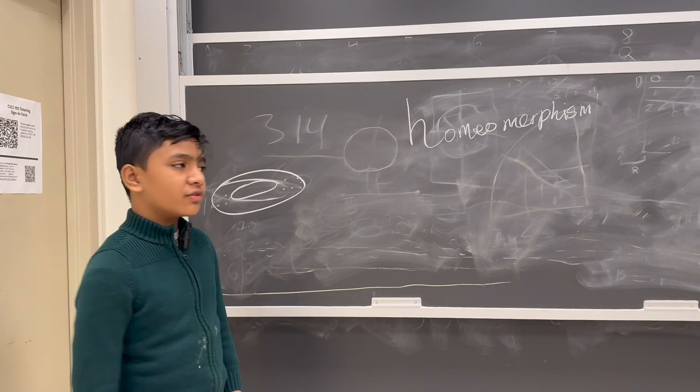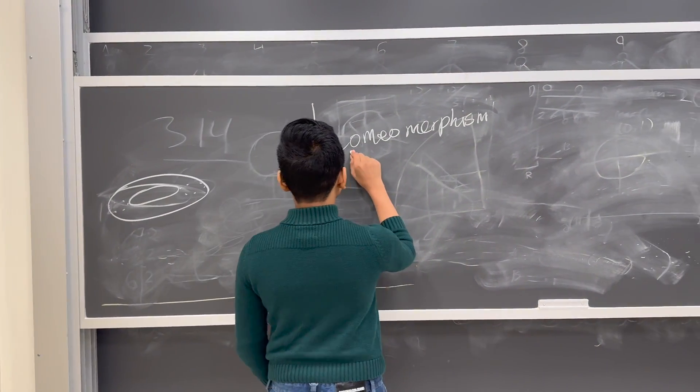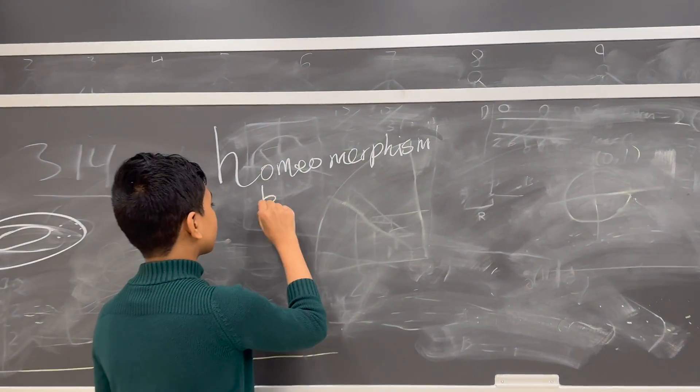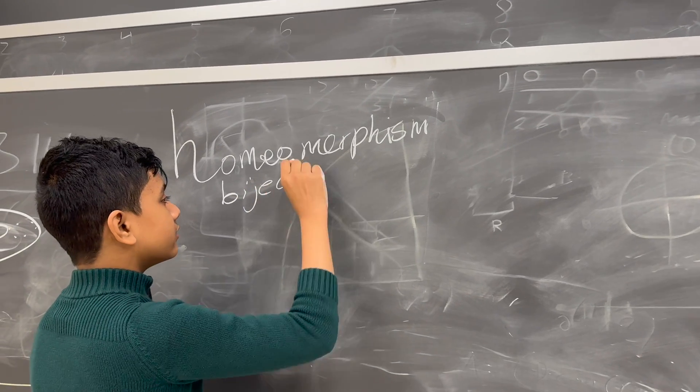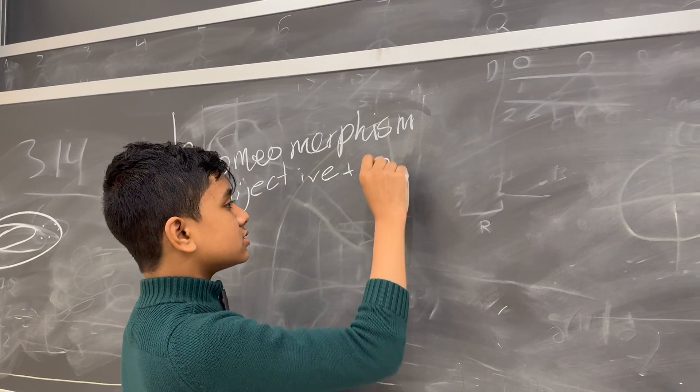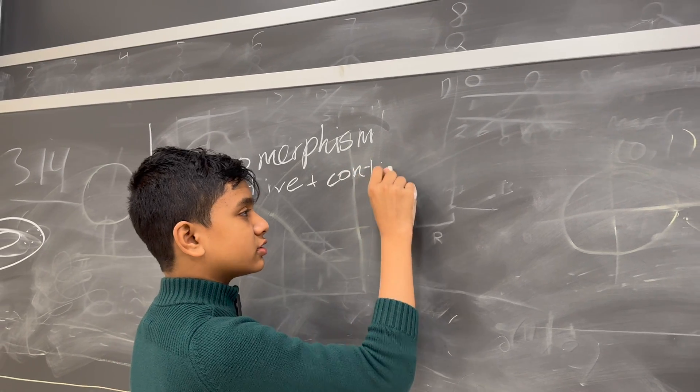What is homeomorphism? Well, it's a function from one surface to another. It's bijective and continuous. There we go. Lecture done.